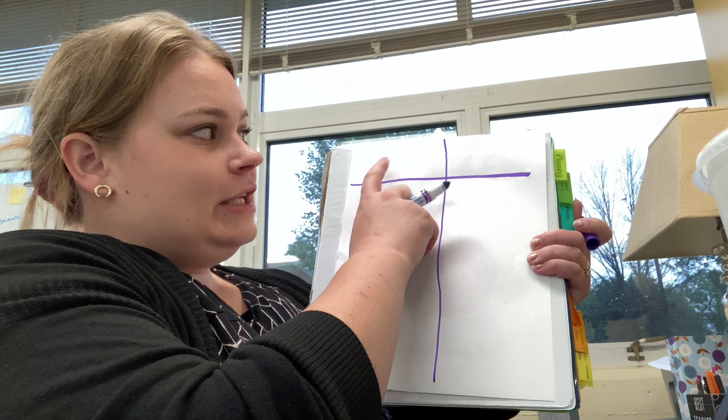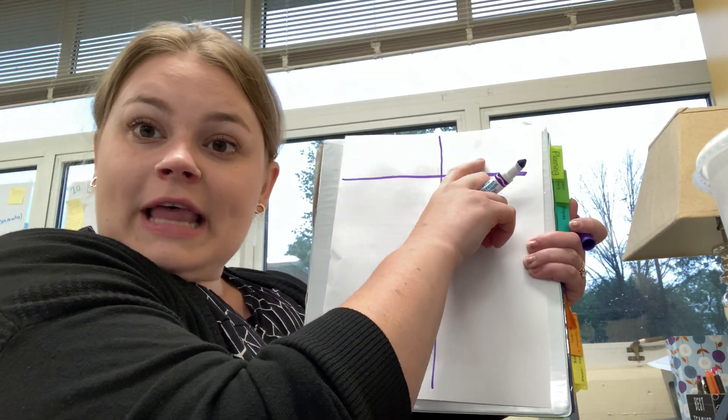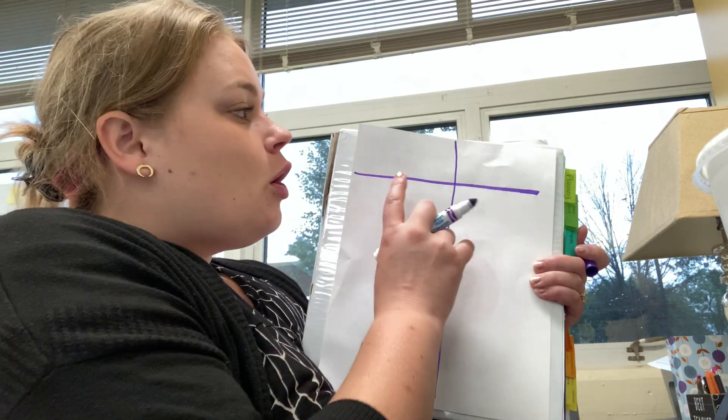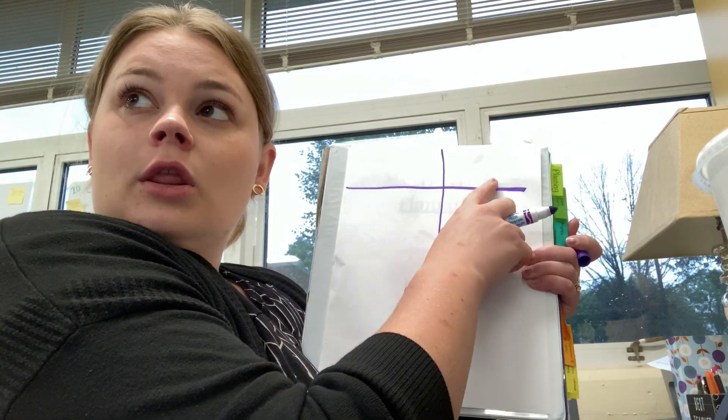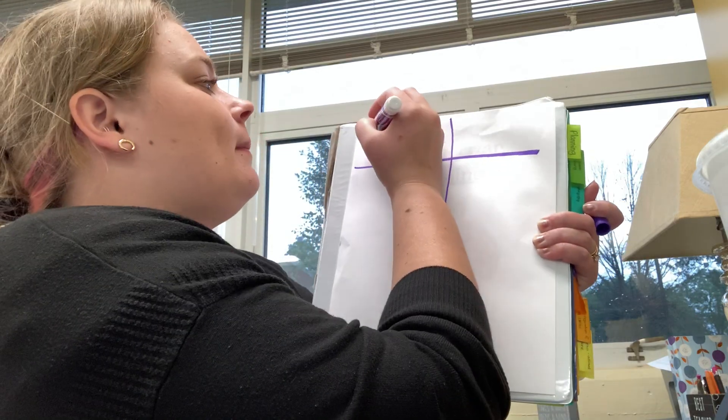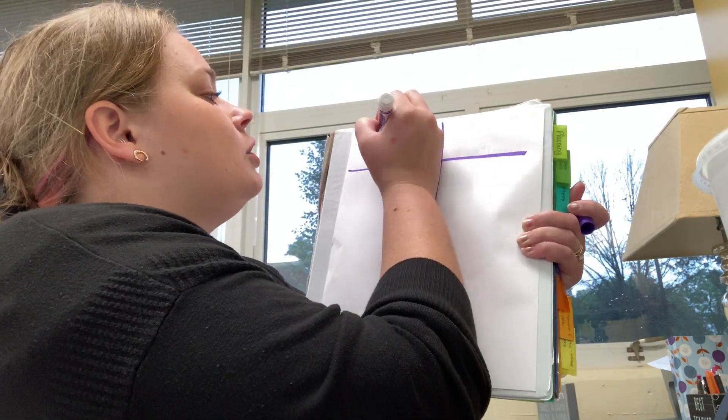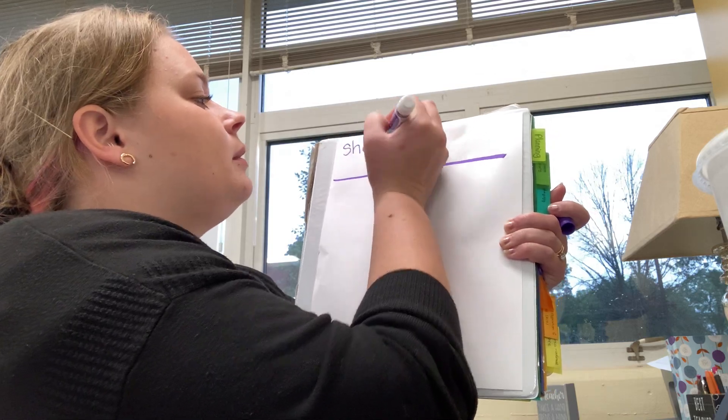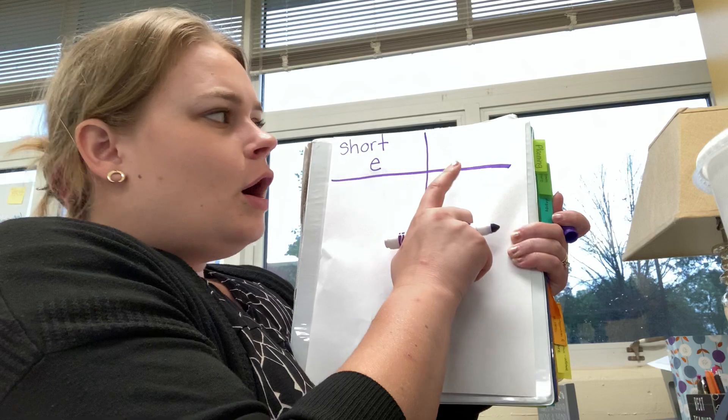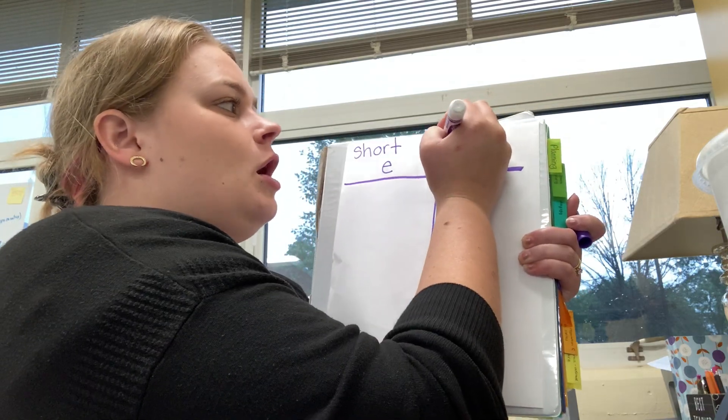Now, on each side, you're going to put a label. So, your first option is to make a T-chart with short E on one side and long E on the other. So, on this side, I'm going to do short E. So, at the top, I'm going to write short E. On the other side, I'm going to do long E.